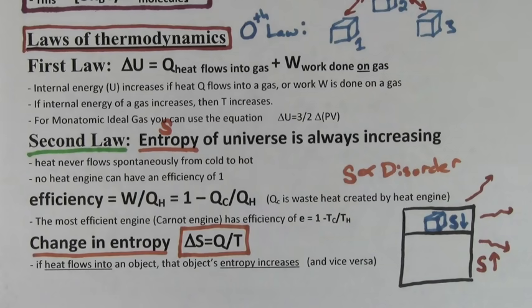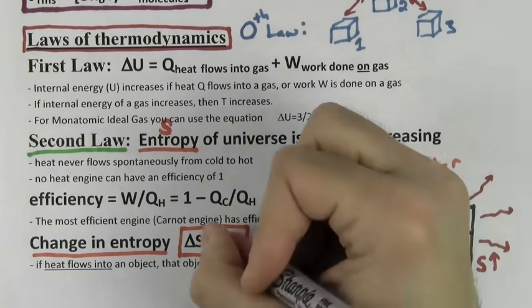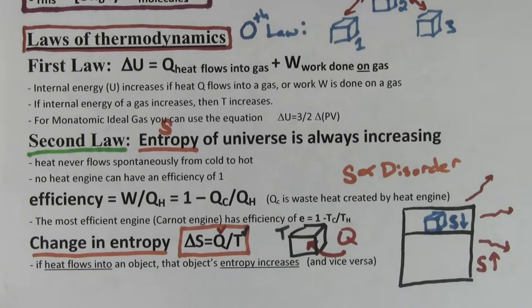If the temperature of an object is constant, you can find the change in entropy of that object by figuring out how much heat flows into the object divided by the temperature of the object. The heat that flows in at constant temperature is going to cause the entropy to go up, and the heat that flows out at constant temperature is going to cause the entropy to go down.